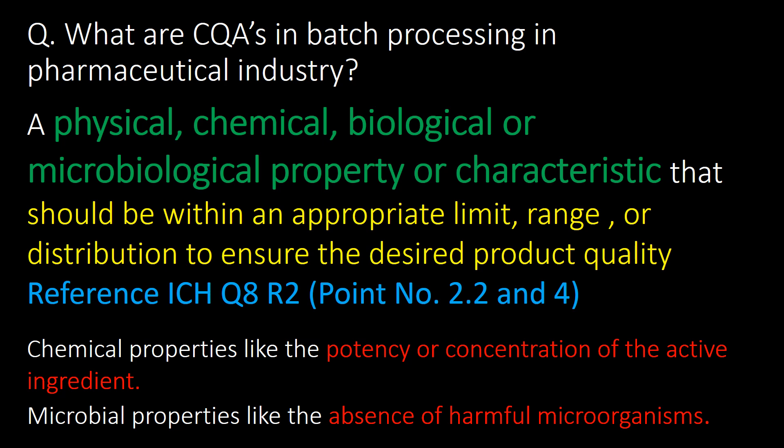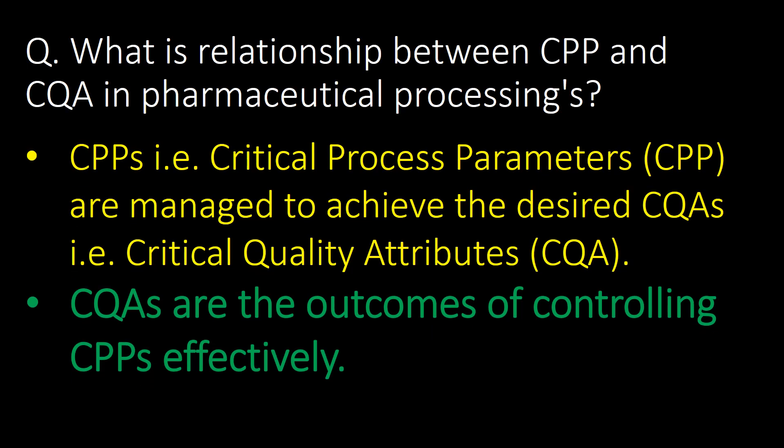Reference guideline: ICH Q8R2. A very important question: what is the relationship between CPP and CQA in pharmaceutical processing? Critical process parameters (CPPs) are managed to achieve the desired critical quality attributes (CQAs). CQAs are the outcomes of controlling CPPs effectively.